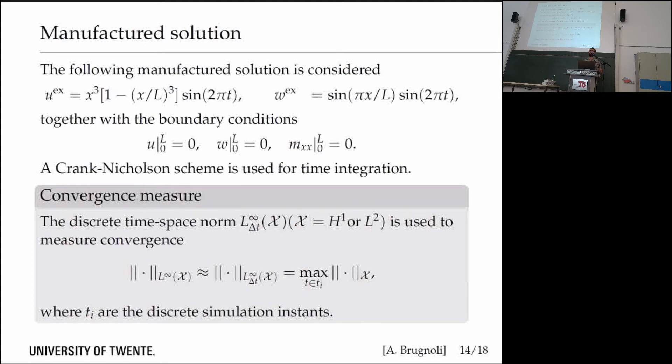We take a manufactured solution because I don't know any analytical solution for the von Kármán model. Together with homogeneous boundary conditions, we can also consider variable time-dependent boundary conditions, but this is just for simplicity. I'm not actually interested in the time discretization. I just take a standard Crank-Nicolson scheme, which in the linear case is symplectic and equivalent to the implicit midpoint.